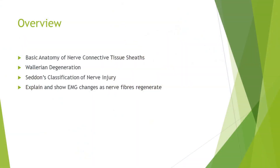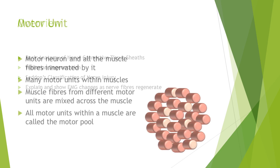In terms of an overview of what I'm going to be talking about, we'll go through the basic anatomy of the nerve connective tissue sheaths. We're going to be talking about Wallerian degeneration and reinnervation, Seddon's classification of nerve injuries, and we're going to explain and show how the EMG of muscles change as nerve fibers regenerate back into them.